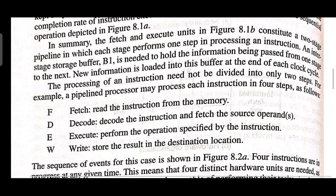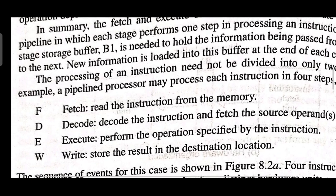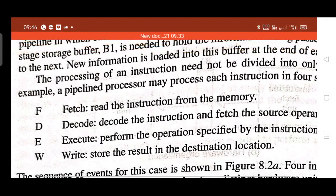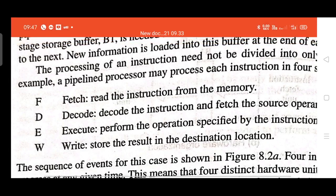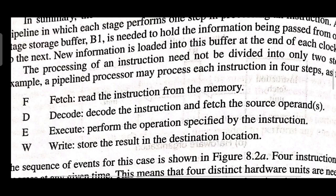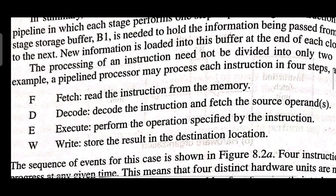The processing of an instruction need not be divided into only two steps — actually there are four steps. What are the four steps? Fetch, decode, execute, and write. Fetch means reading the instruction from memory. Decode means decoding the instruction and fetching the source operand. Execute means performing the specified operation such as addition, subtraction, or multiplication. Write means storing the result to memory or the destination location. These four stages are carried out during execution of any instruction, though we had simplified them into two stages: fetch and execute.